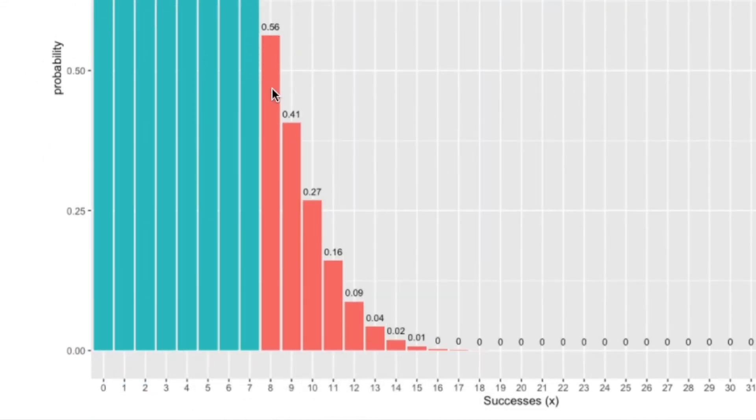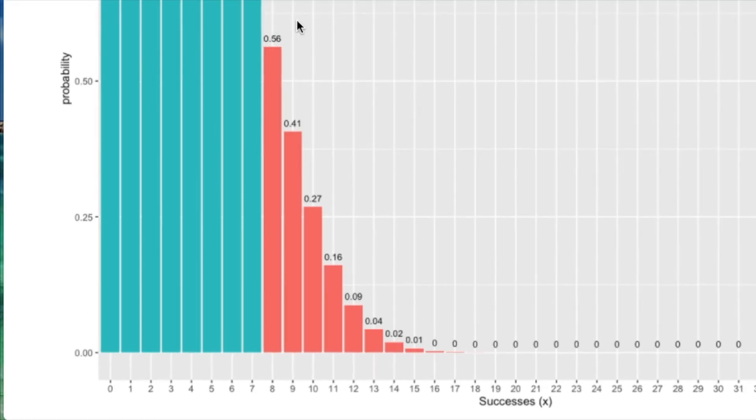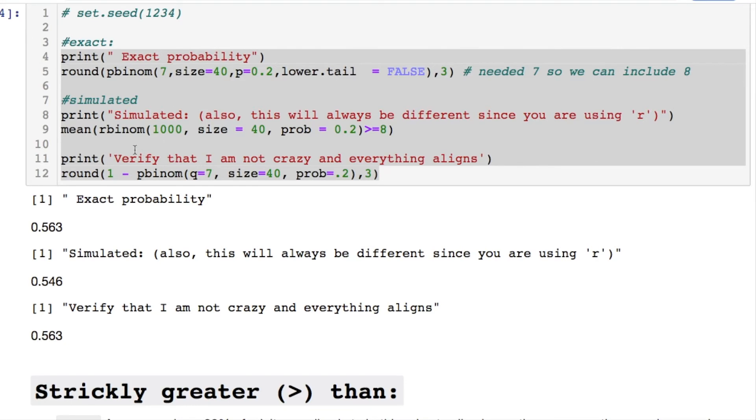So you'll notice that if we're looking at this right tail and we want eight greater than or equal to finding our little chickens, we got a 50 percent chance of obtaining this given that we had a 20 percent chance of catching a chicken with a trial of 40. And here's the simulated values.